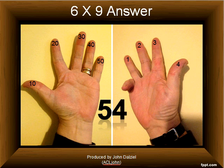The three steps are: bend over the finger you're multiplying by, the fingers and thumbs to the left of that bent over finger are tens, and the fingers and thumbs to the right of the bent over finger are units.